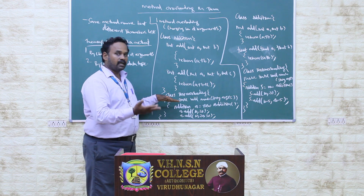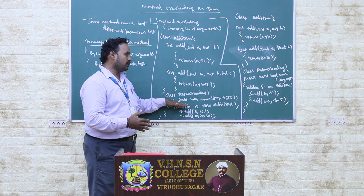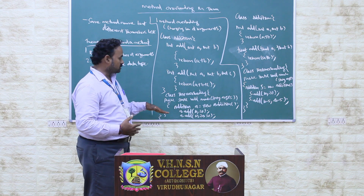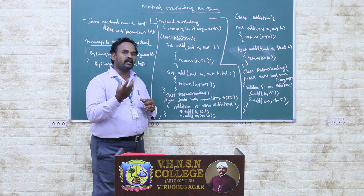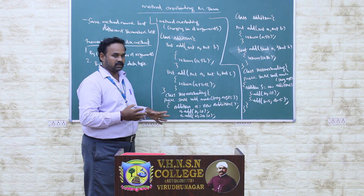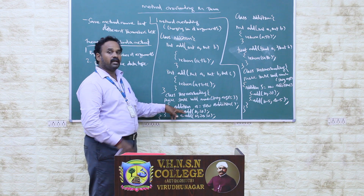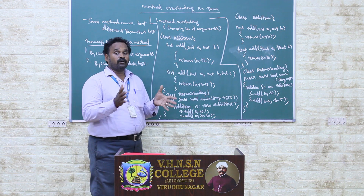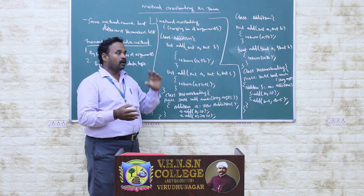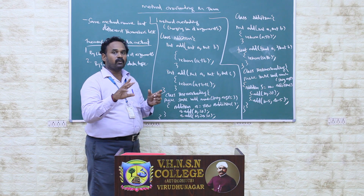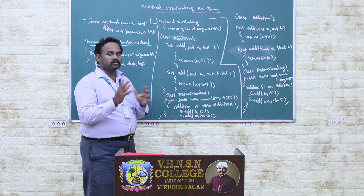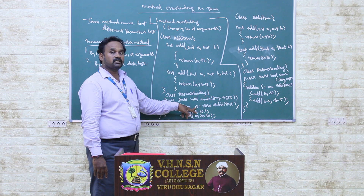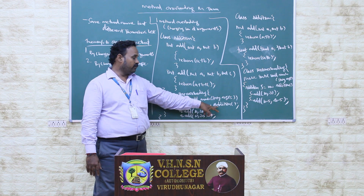We are creating another class. Usually in Java we have the public static void main method. Within the main method, we are creating objects for a particular class. Here we are creating an object for the addition class. The format to create an object is: class name, object name, equals new class name. The class name is 'addition'.